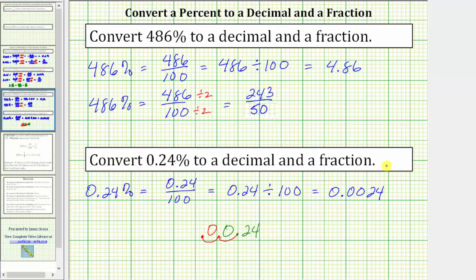Again, the shortcut rule is to remove the percent sign and divide by 100, which we have here, which gives us a decimal 0.0024. And now let's write the percent as a fraction. We'll begin with the fraction 0.24 over 100.